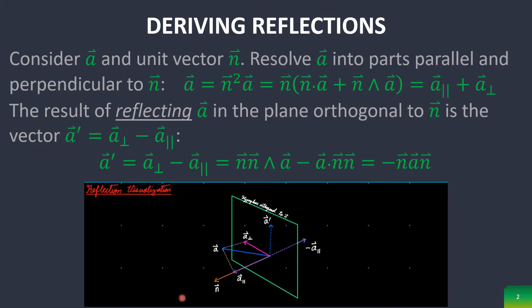Hopefully this gives an easy visualization of what's happening here. If this is the vector a and this is the unit vector n, then this is the projection of a onto n, and then this is the projection of a onto the hyperplane orthogonal to n. And then all you do is negate the parallel part, and that reflects it across the plane.